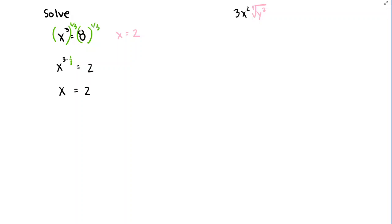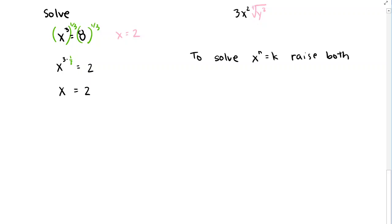We can use this idea to solve equations involving a single instance of x raised to some power. In general, to solve x to the n equals k, you want to raise both sides to the power 1/n. If there are multiple terms with x raised to different powers, things get more challenging, but for a single power of x, we solve it by undoing the exponent — taking both sides to the reciprocal of that exponent.